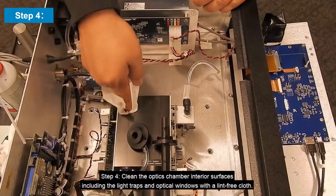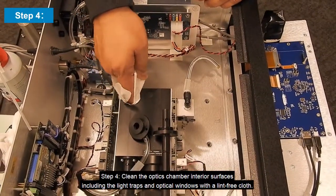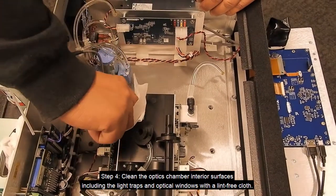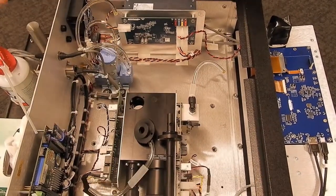Step 4: Clean the optics chamber interior surfaces, including the light traps and optical windows, with a lint-free cloth.